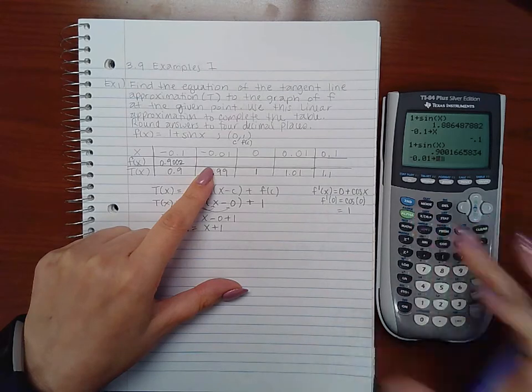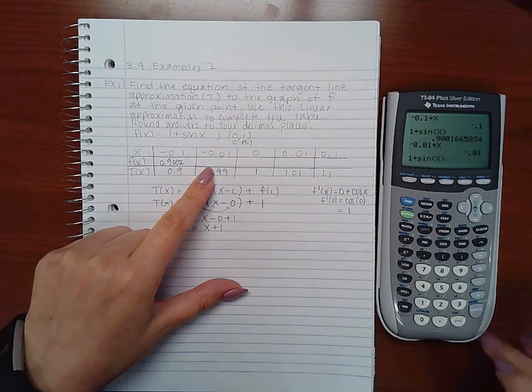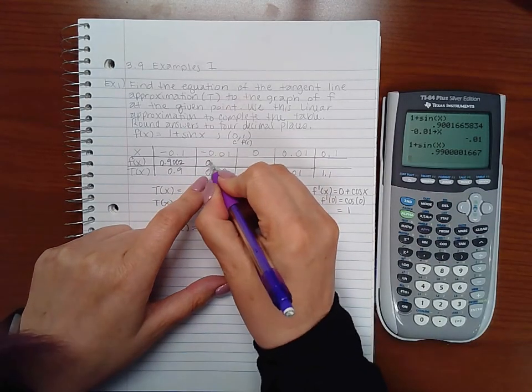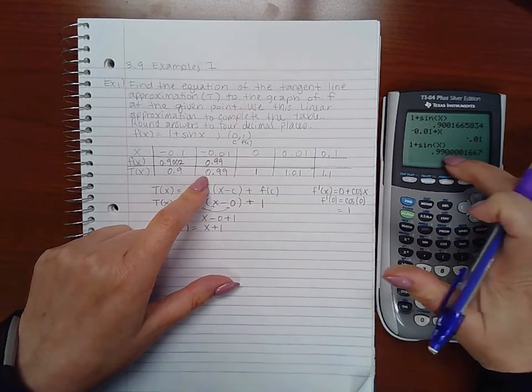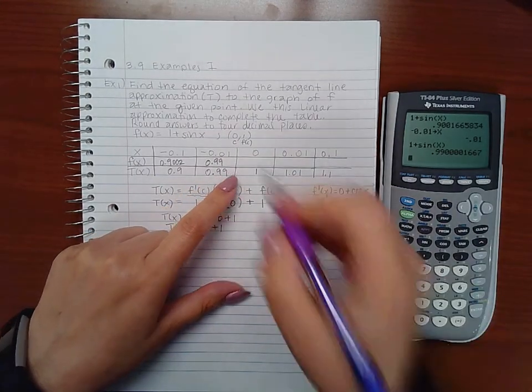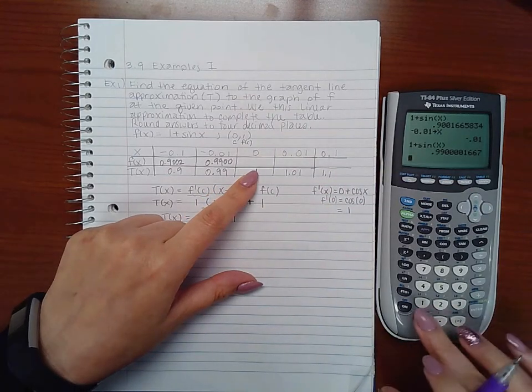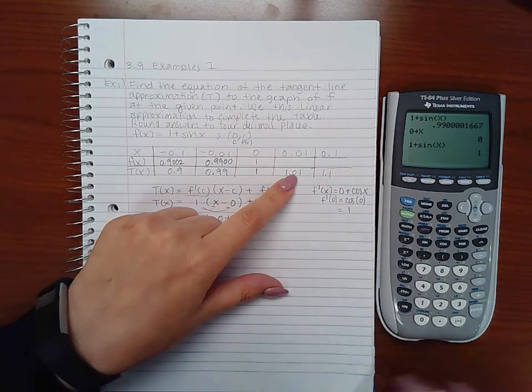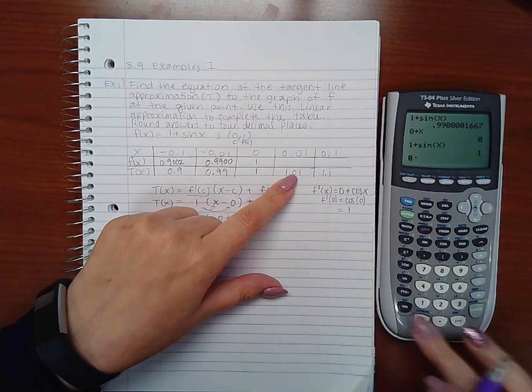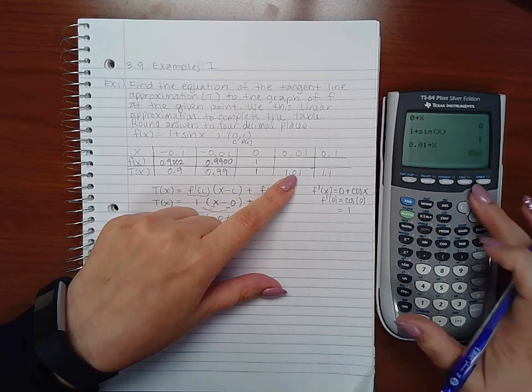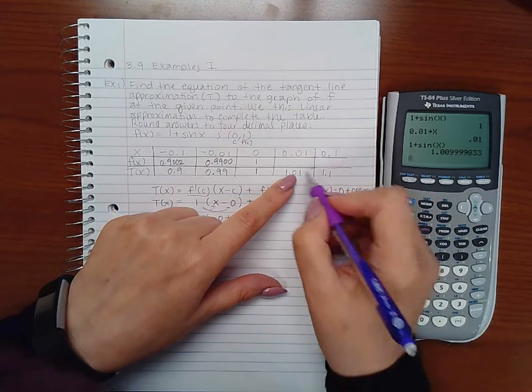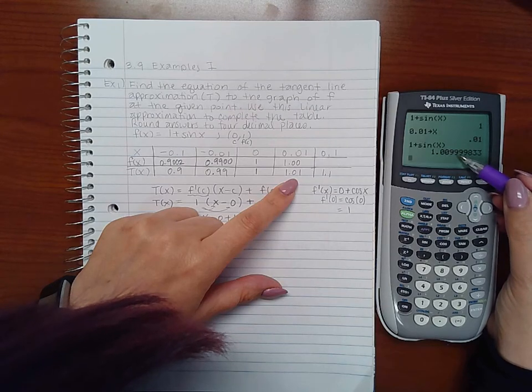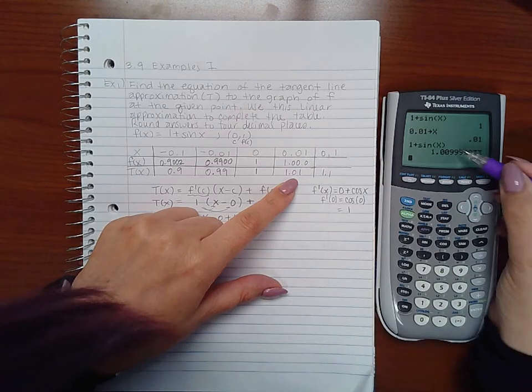For x = -0.01, f(x) = 0.9900—these zeros can be written if you want. If I plug in 0, I get 1. For x = 0.01, I get 1.0100—actually the rounding causes the 9s to become 0s and carry a 1. Now for the last number, x = 0.1...